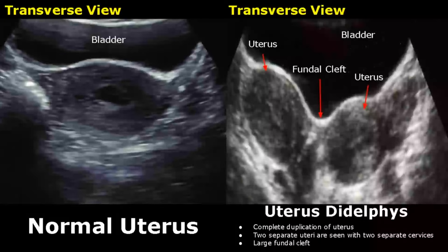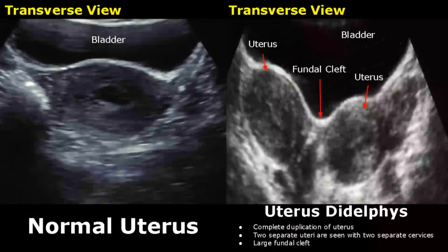Hello everyone, this is Dr. Sam and this video is about congenital uterine abnormalities on ultrasound. Congenital uterine abnormalities occur during embryonic life and are types of Müllerian duct anomalies. These are transabdominal images of the uterus.